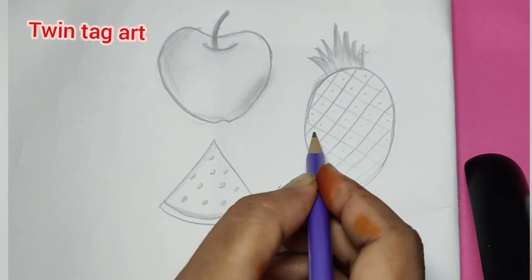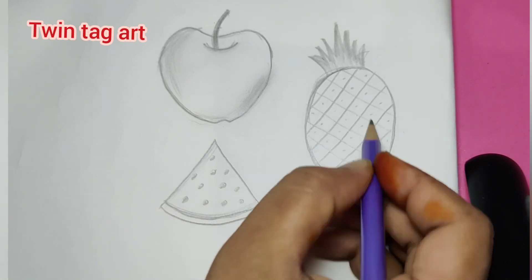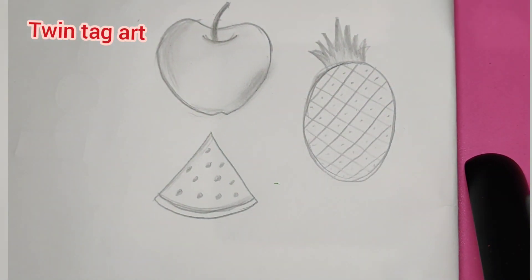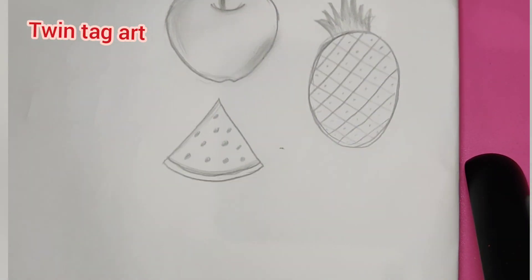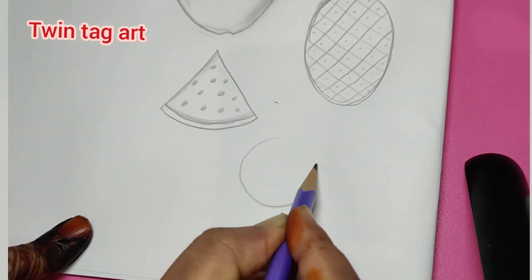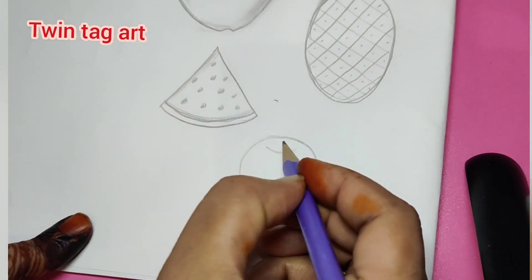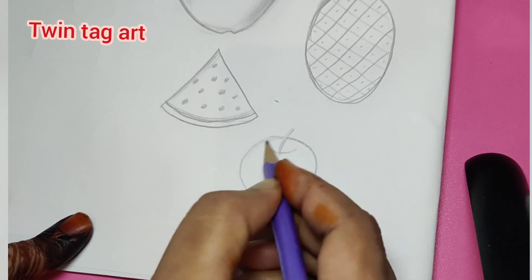This is our home park. Now let's draw a circular shape. Our orange is also ready.